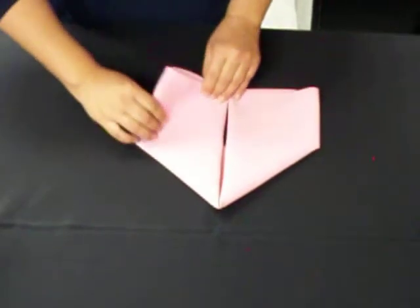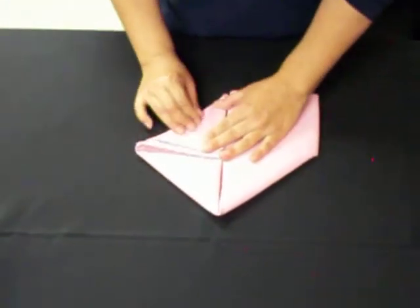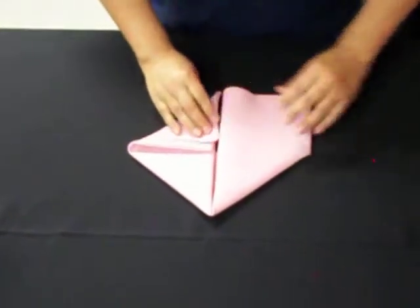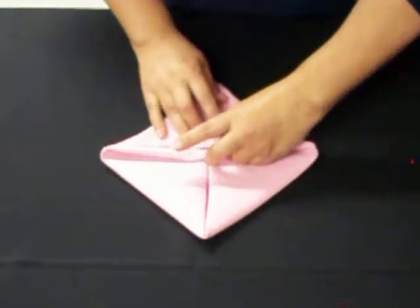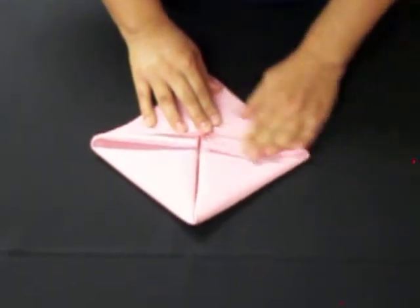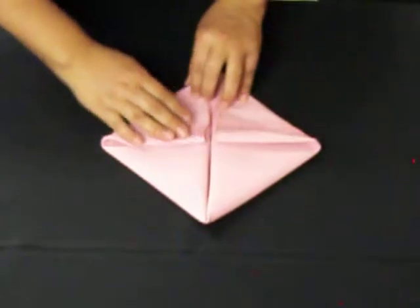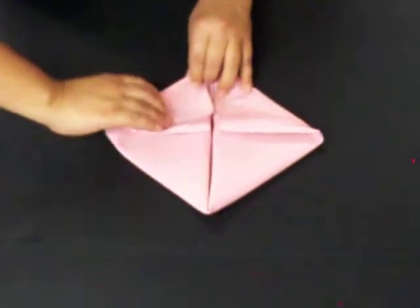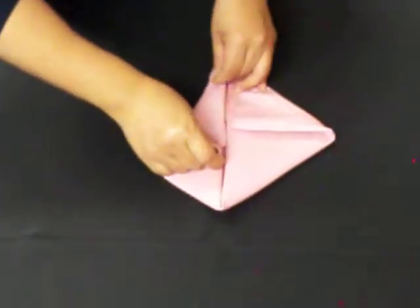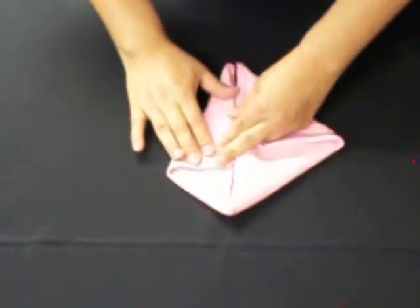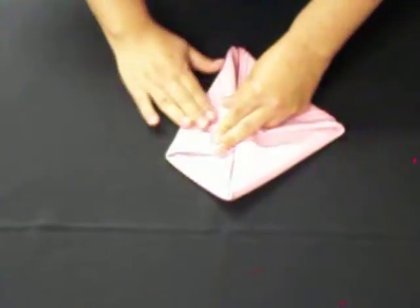You're going to bring this side up. You're going to bring the left side to the center as well. Then you're going to fold this one in half. Again, with every fold, press on the crease.